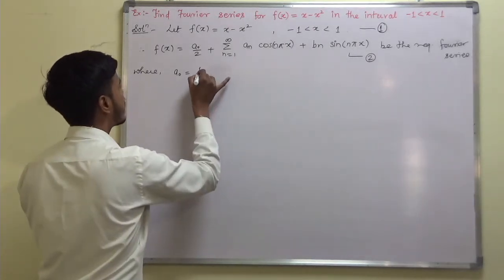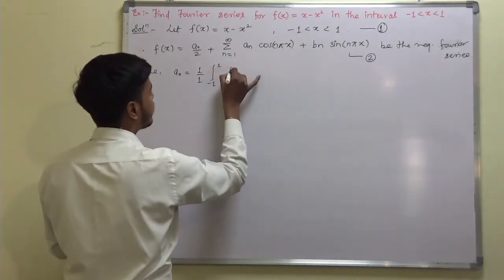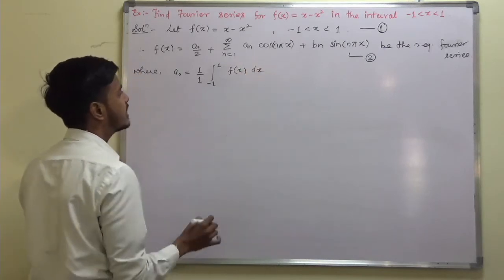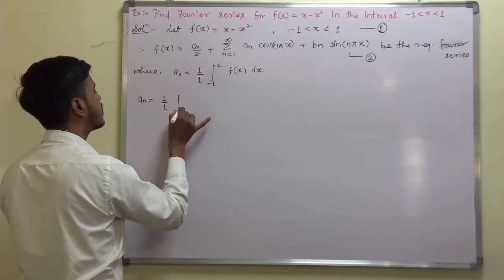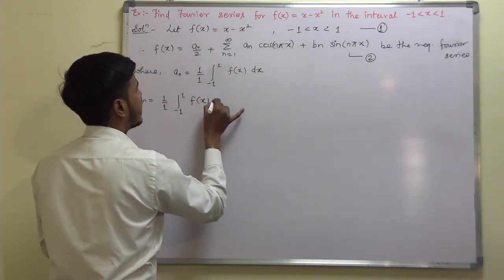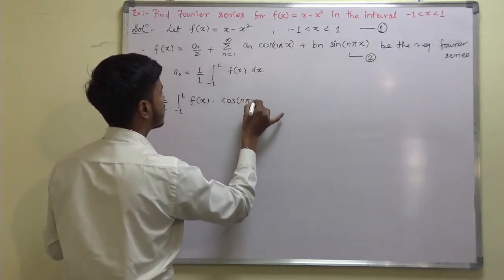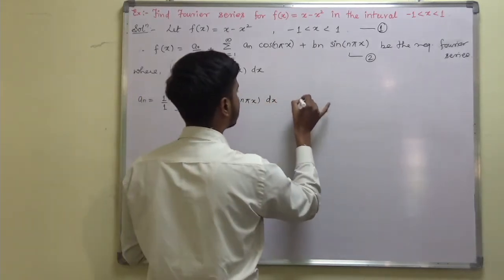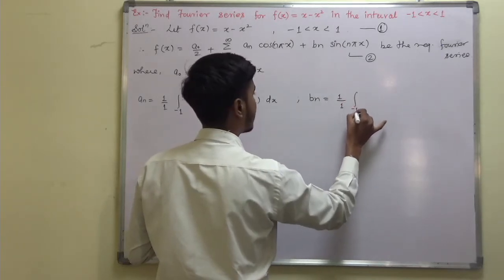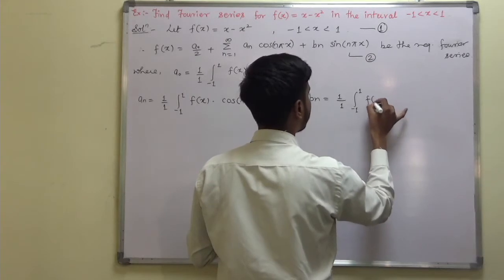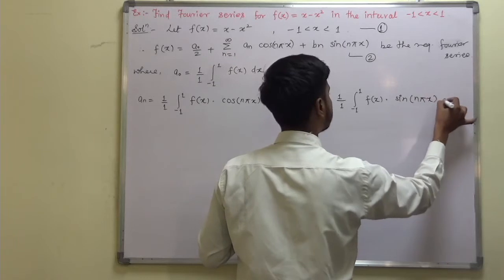Since this is not an even function we cannot simplify the integration. So we write: a₀ = (1/1) ∫₋₁¹ f(x) dx; aₙ = (1/1) ∫₋₁¹ f(x) cos(nπx) dx; and bₙ = (1/1) ∫₋₁¹ f(x) sin(nπx) dx.